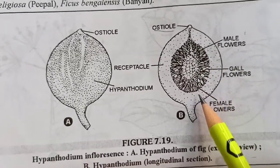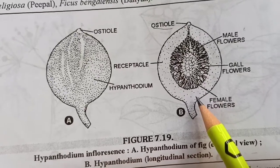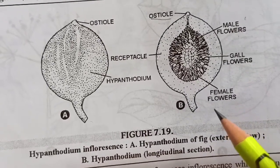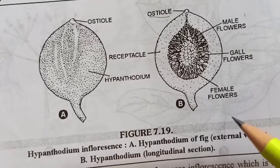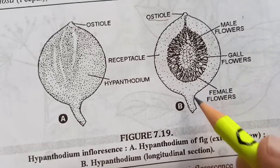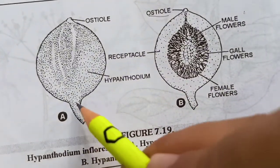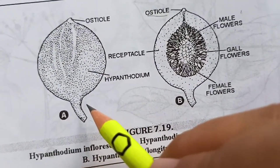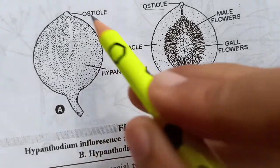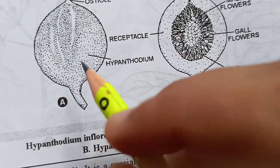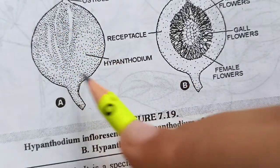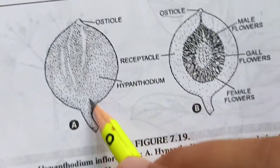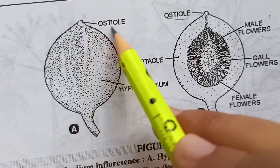Fig ek fruit hai, aur fig ka hamare paas diagram hai jo ki hypanthodium inflorescence show karta hai. Hypanthodium mein ek special tarah ki inflorescence hai jo banti hai by the condensation of main axis. Peduncle jo hai, woh cup shape ya flask shape mein convert ho jata hai. So the peduncle or the main axis gets condensed into a cup or a flask shape, aur receptacle a jaata hai. Receptacle ki opening hoti hai, ek small opening hoti hai jise hum kehte hain osteol.